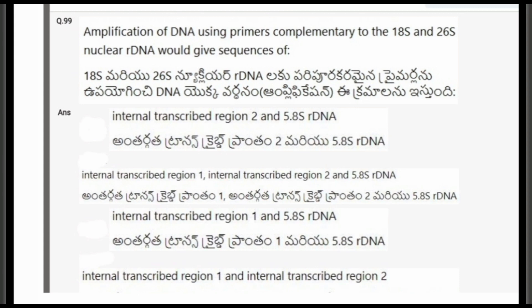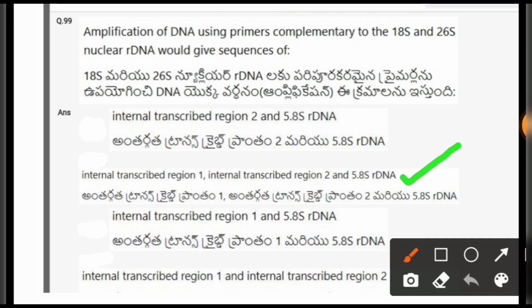Next question: Amplification of DNA using primers complementary to the 18S and 26S nuclear rDNA would give sequences of? The options are: ITS1 and ITS2 and 5.8S rDNA; ITS1, ITS2 and 5.8S rDNA; ITS1 and 5.8S rDNA; ITS1 and ITS2. The correct option is the second one, that is ITS1, ITS2 and 5.8S rDNA.